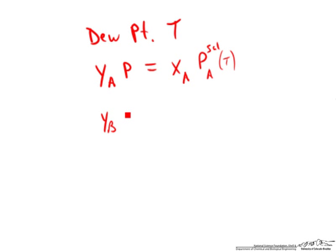We can write the same relationship for component B, where in this case we have the saturation pressure, or vapor pressure for water at the dew point temperature. And now what we can do is rearrange this equation, this is the most convenient way to solve these kind of problems, and realize that we can make use of the relation that xA plus xB is equal to 1.